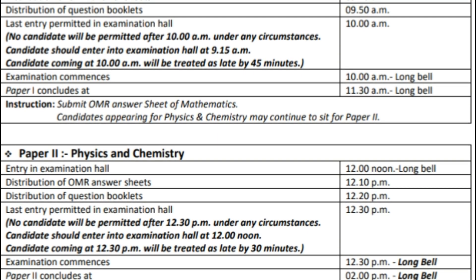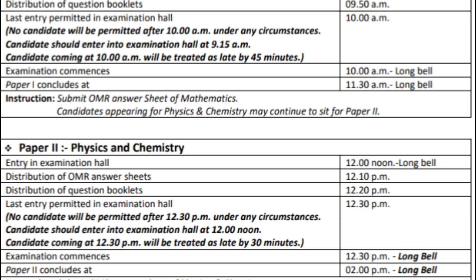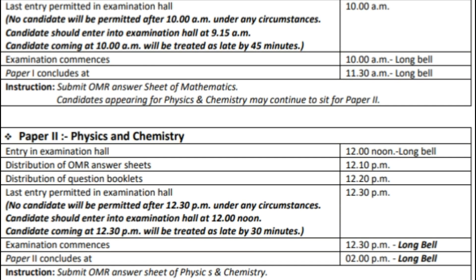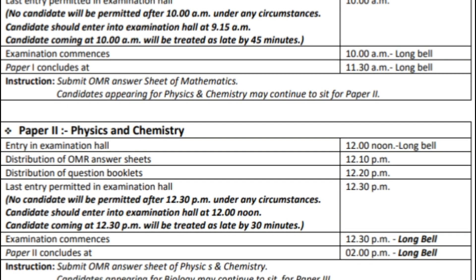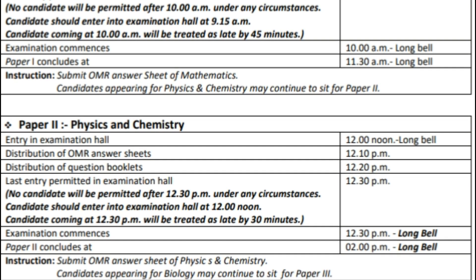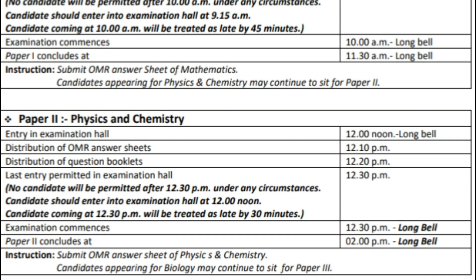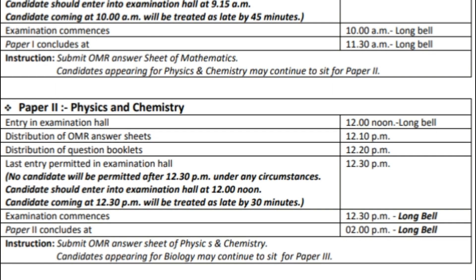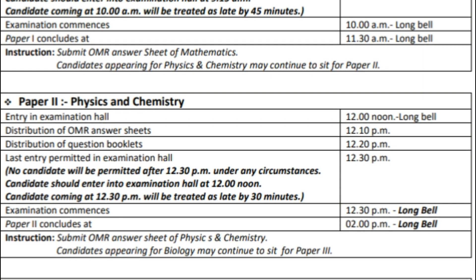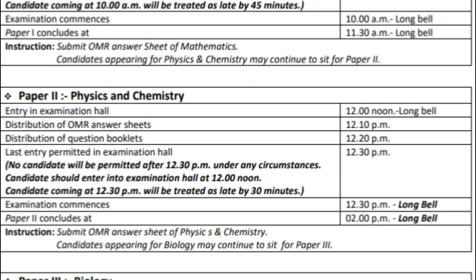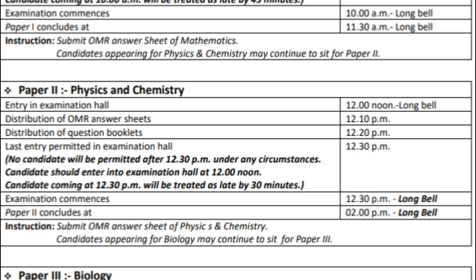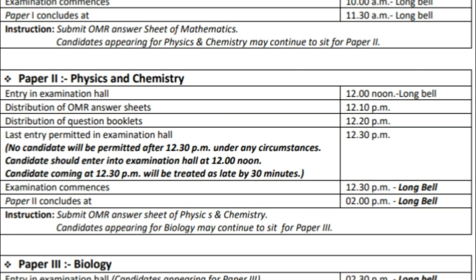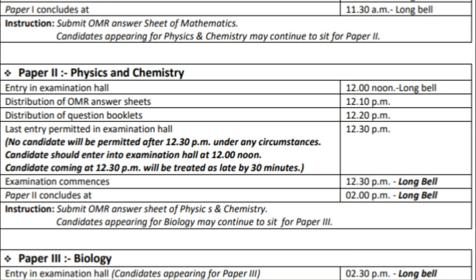The OMR sheet will have rows of questions with A, B, C, D options in bubbles, and you will have to mark your answers in those bubbles. Be very careful while marking answers. Make sure you fill the circle completely with a black ink ballpoint pen only. Any rough work should be done in the question booklet — do not spoil the OMR sheet at all.